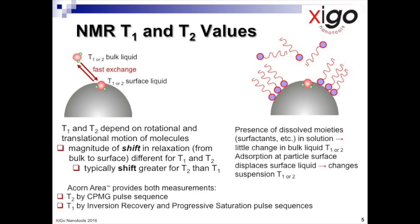Although both T1 and T2 depend on the rotation and translation motions of molecules, the magnitude of the shift may differ significantly because of the different way in which the two processes are linked to molecular motion.